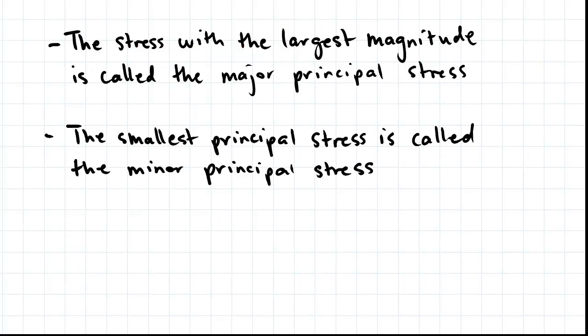So the stress of the largest magnitude is called the major principal stress, and this is denoted by sigma 1. And the smallest principal stress is called the minor principal stress. This is denoted by sigma 3.